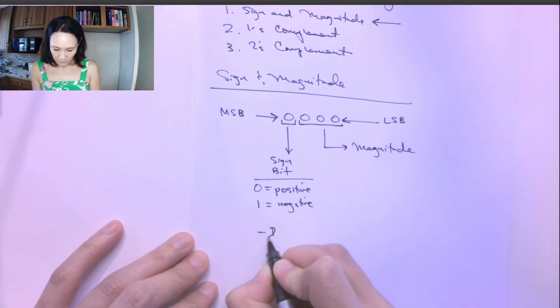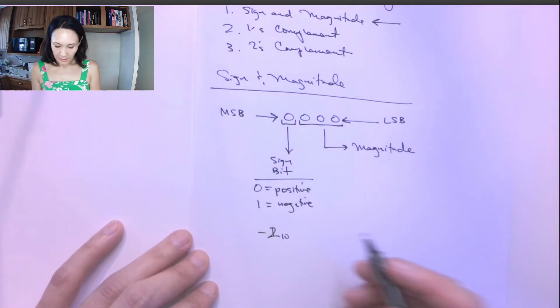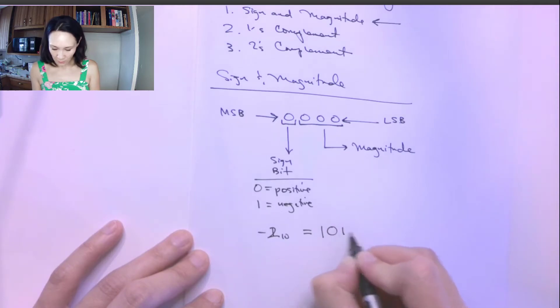If we had a negative two in decimal, if we represented this in four bit sign and magnitude convention, this would be: the most significant bit would be one because it's a negative number, and then two in binary is zero, one...